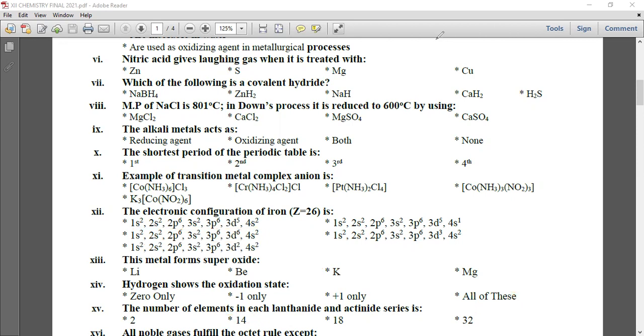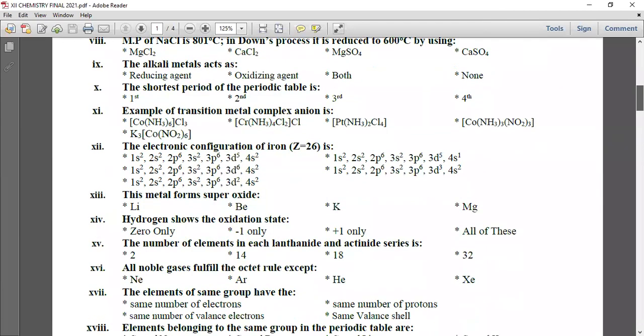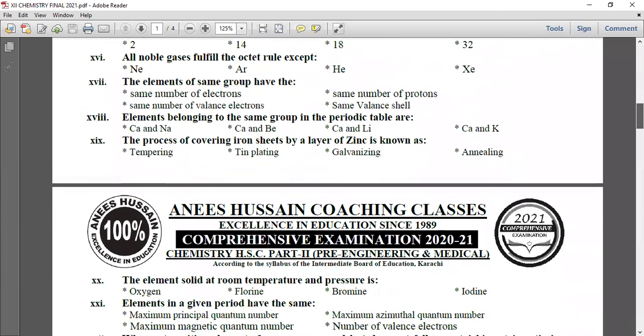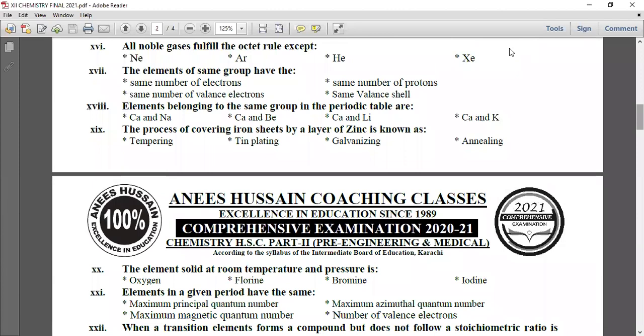All noble gases fulfill the octet rule except helium. Elements of the same group have the same number of valence electrons. Valence electrons are the outermost shell electrons, and they are the same for elements in the same group. Elements belonging to the same group in the periodic table are calcium and beryllium - both belong to group two.